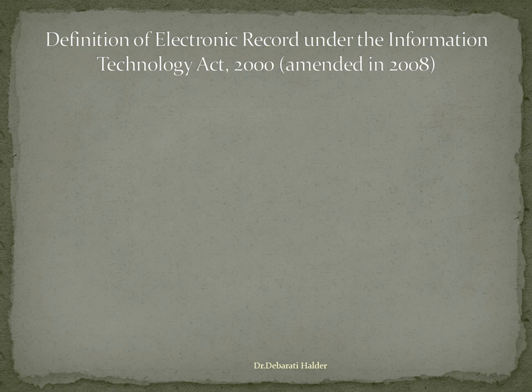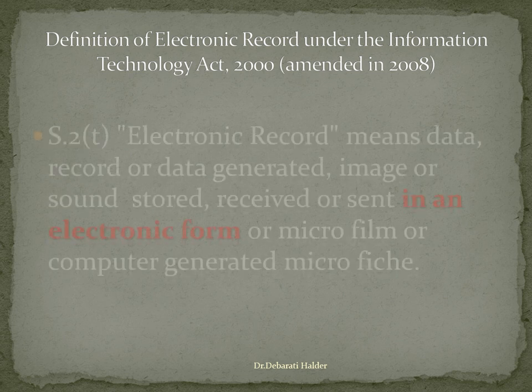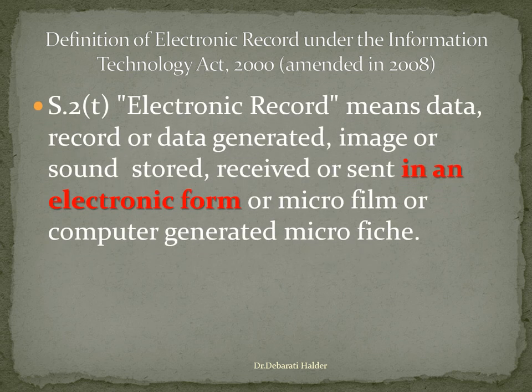Now, let us know the definition of electronic record under the Information Technology Act 2000 amended in 2008. Section 2T defines electronic record as data record or data generated, image or sound stored, received or sent in an electronic form or microfilm or computer generated microfiche.